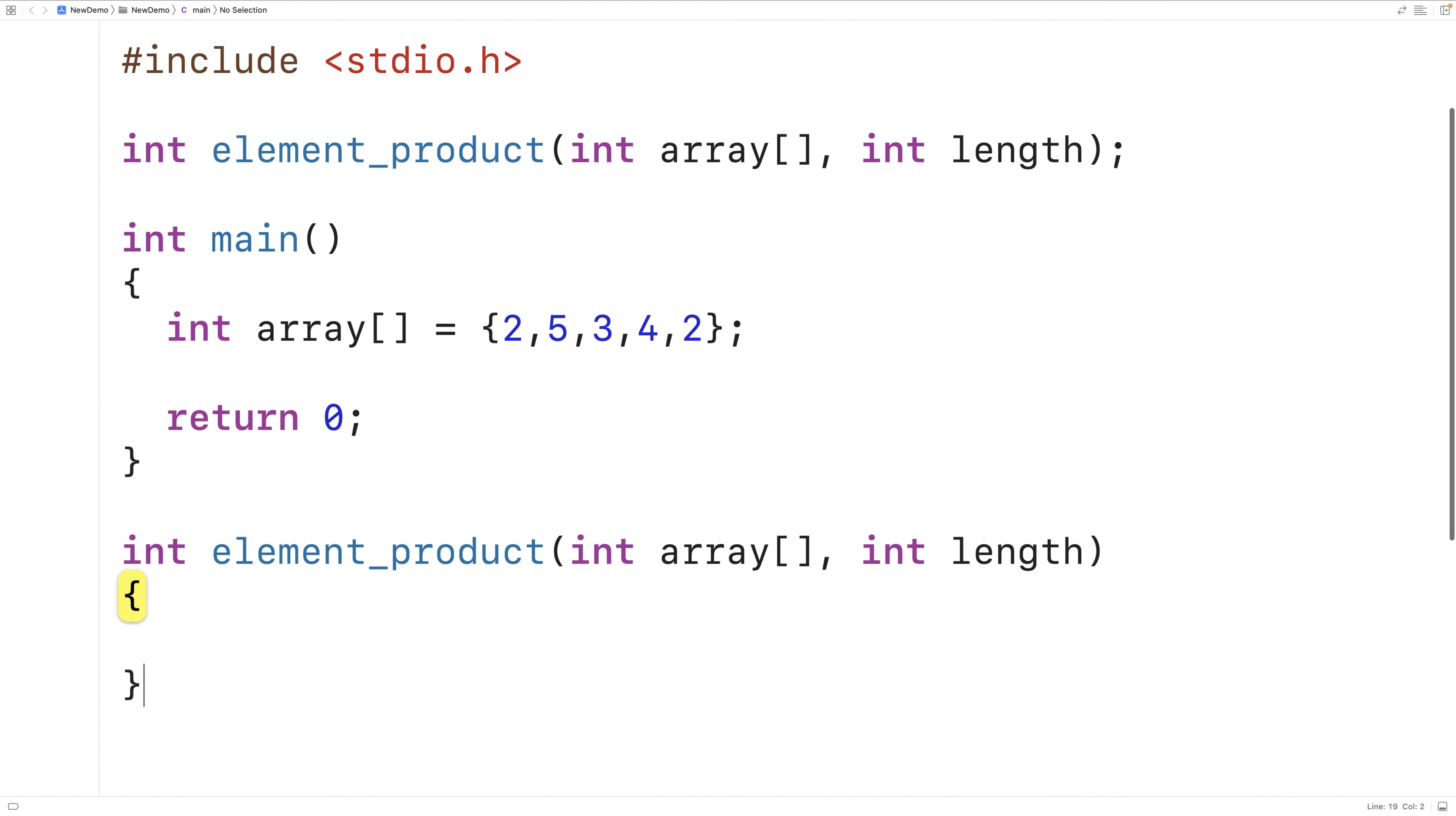The way we're going to solve this problem is we're going to loop through the array one element at a time and perform one multiplication at a time to build the product of all the elements in the array.